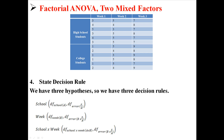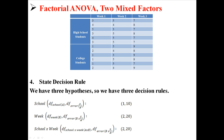Next, our decision rule. Remember that we have three hypotheses, so we're going to have three decision rules. In order to find these, we're going to use the degrees of freedom for our effect and the degrees of freedom for the error associated with that effect. For school, we're going to be using df of 1 and 10, and for week and for the interaction, we're going to be using df of 2 and 20.